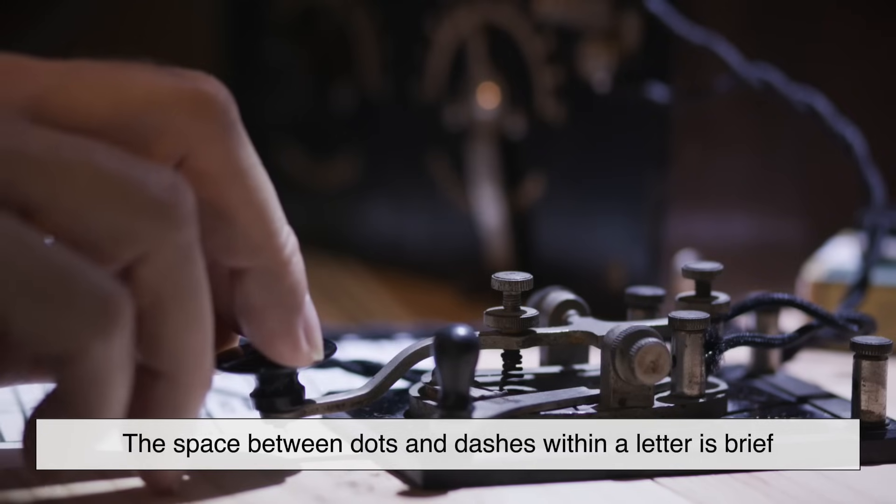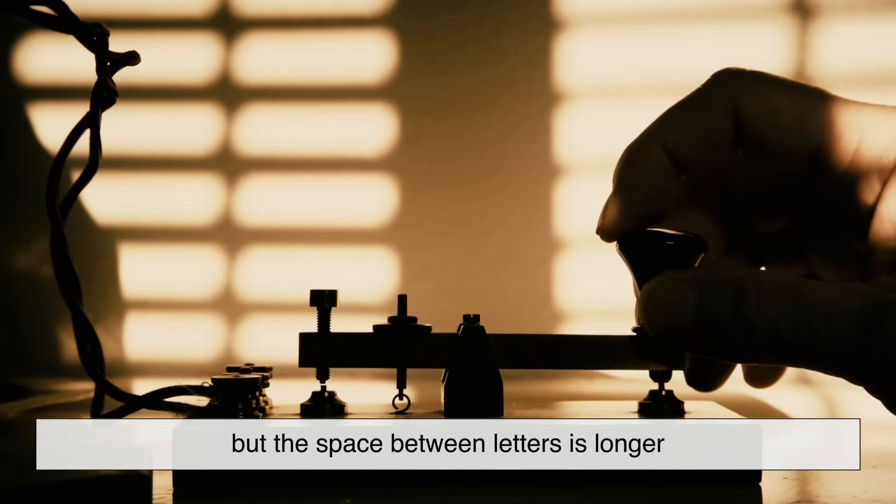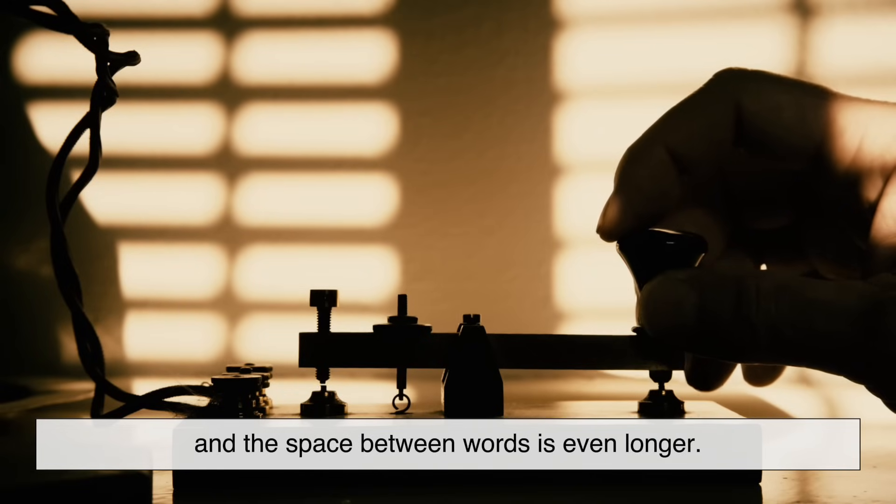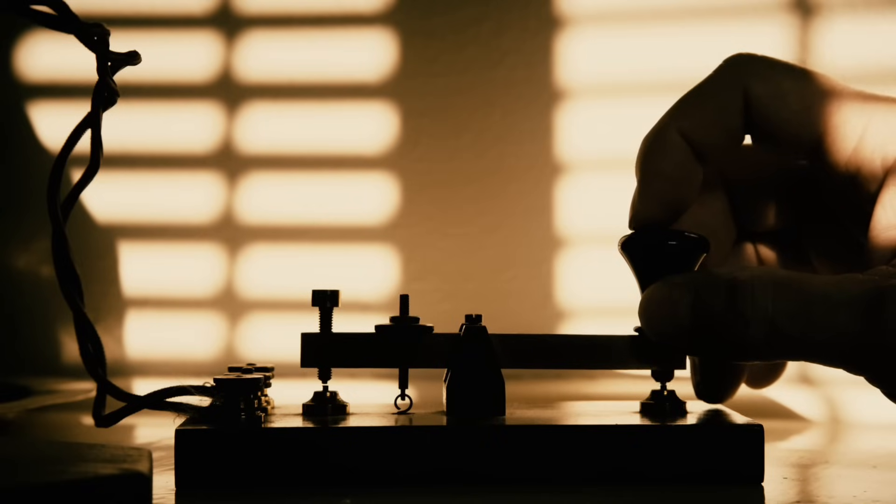The space between dots and dashes within a letter is brief, but the space between letters is longer, and the space between words is even longer. This structured timing helps make Morse code understandable even when transmitted at high speeds.